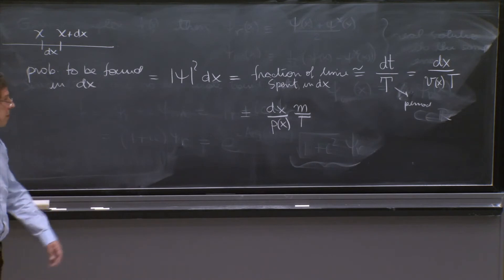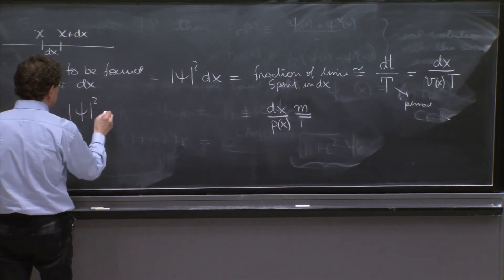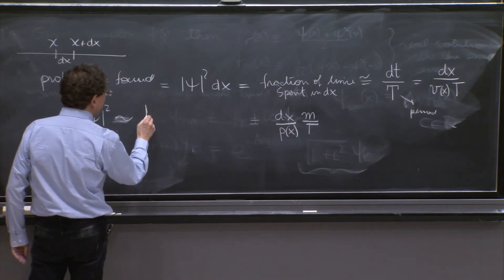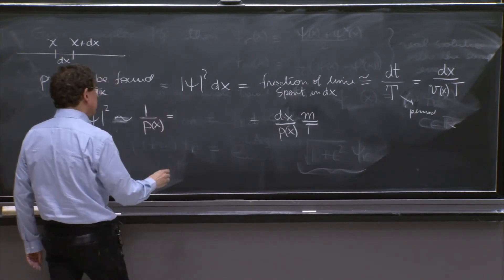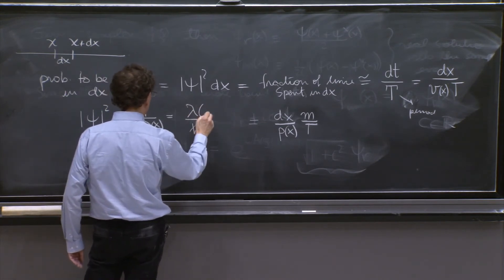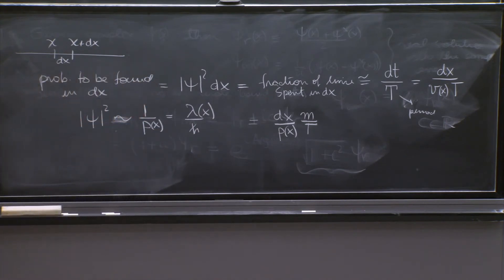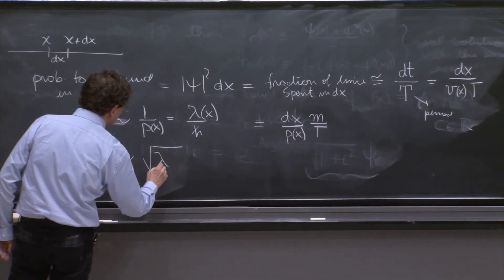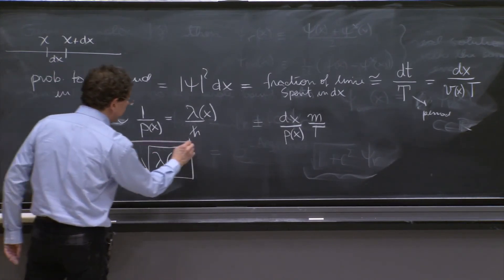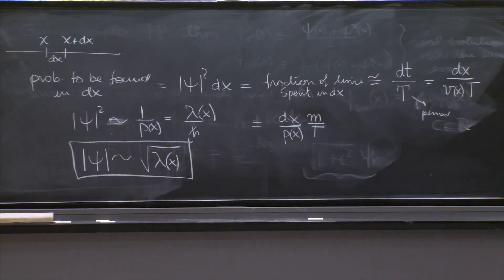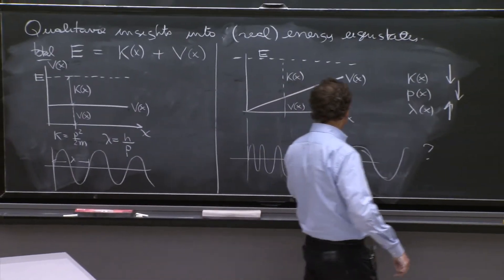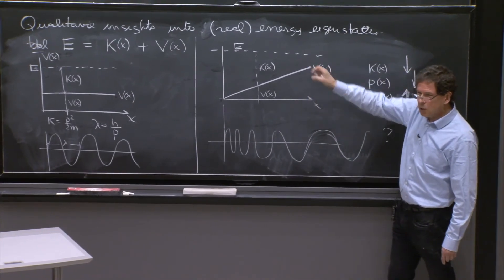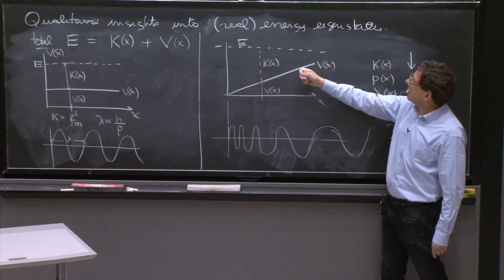Here is the interesting result: the magnitude of the wave function should be proportional to 1 over p(x), or equivalently proportional to lambda over h-bar of x. So the key result is that the magnitude of the wave function goes like the square root of the position-dependent de Broglie wavelength. If the de Broglie wavelength is becoming bigger because the momentum is becoming smaller, then yes, the particle is spending more time there.